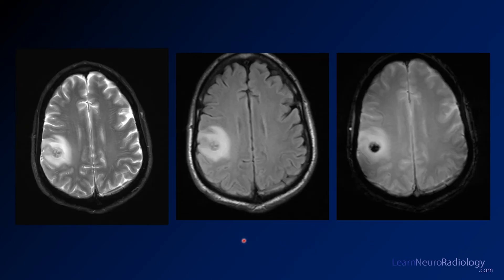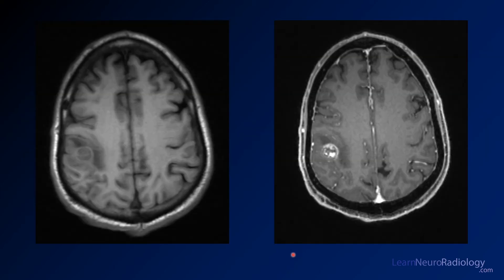Here you see a T2 FLAIR and gradient image. There is some hemorrhage centrally within this lesion, some surrounding edema, and it's centrally isointense to slightly hypointense on T2. On the pre and post contrast images, you see a very irregular pattern of enhancement — it's not solid and doesn't have a regular margin. Those are features that might make you think of glioblastoma over metastatic disease.